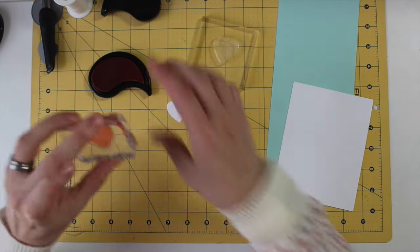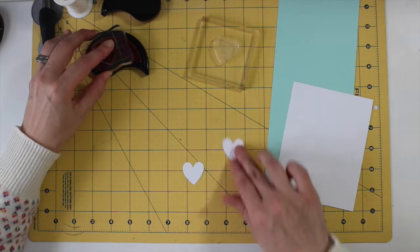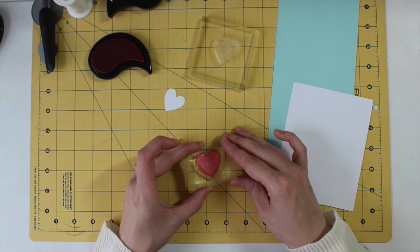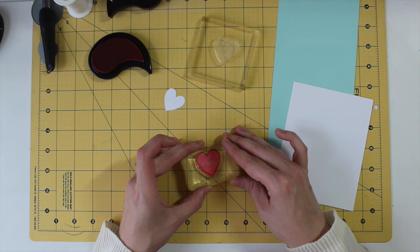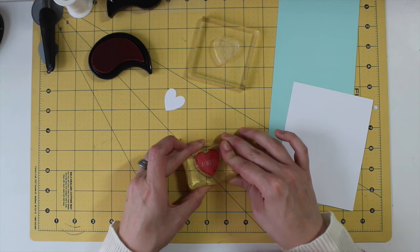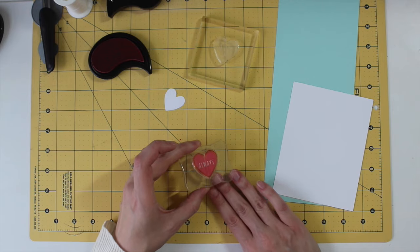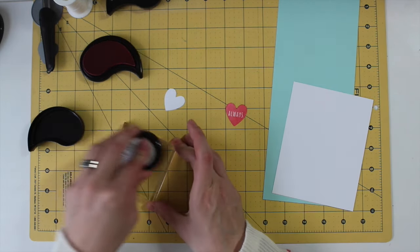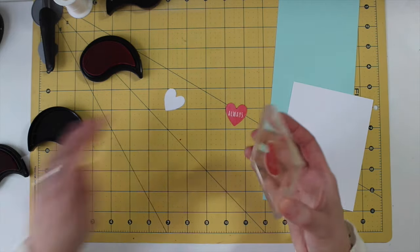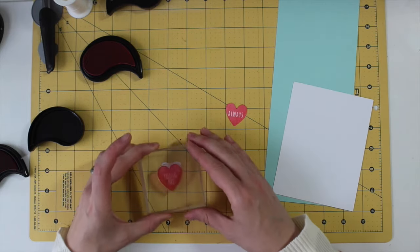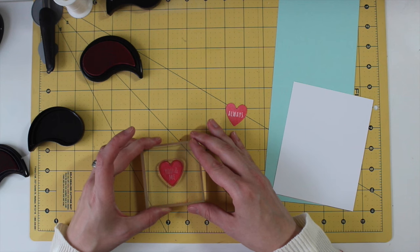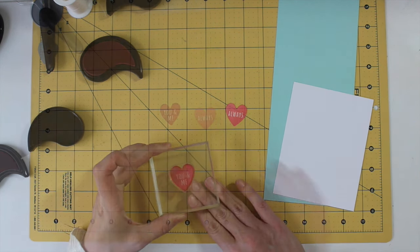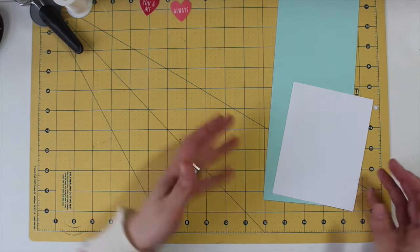I'm actually starting with that back die cut now. I'm going to stamp this heart image from the XOXO stamp set using Berry Sorbet ink. And like I said, as long as you use a nice clean cutting surface, you're not really even going to notice on something like this that it's the back of a die cut. On the front I'm using Pure Poppy, and those are going to get sandwiched together a little bit later.